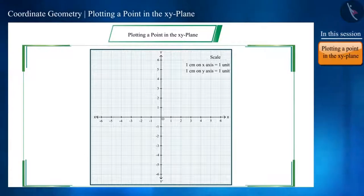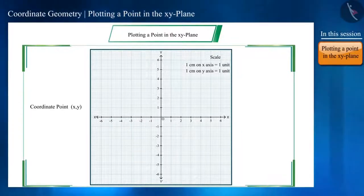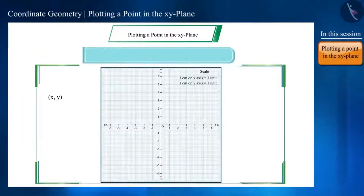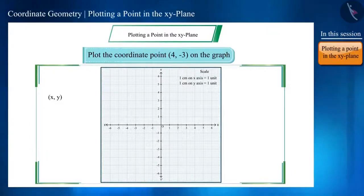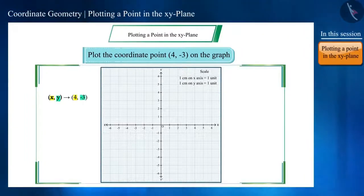Friends, we know that we write XY for a coordinate point. First, X coordinate and then Y coordinate. So let's plot this coordinate point (4, -3) on the graph paper. Here the X coordinate is 4 and the Y coordinate is minus 3.